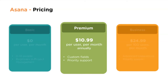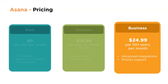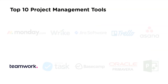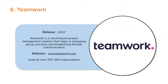Asana pricing: the basic model supports 0 to 15 people and is free for beginners. Premium includes custom fields and priority support at $10.99 per user per month billed annually. The business version includes advanced integrations and priority support at $24.99 per 100 users per month. Companies using Asana include Deloitte, Vodafone, Red Bull, Uber, Salesforce, and NASA.